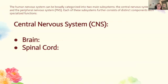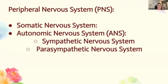The spinal cord extends from the brain down through the vertebral column. It acts as a pathway for nerve impulses that travel to and from the brain and the peripheral nerves, and it mediates reflex actions and rapid responses. That covers your basics for the brain and spinal cord.